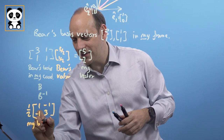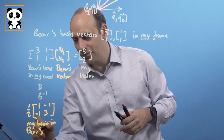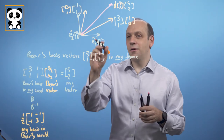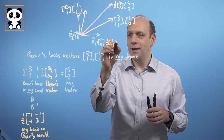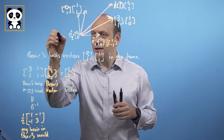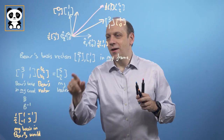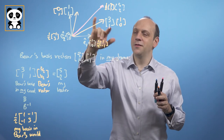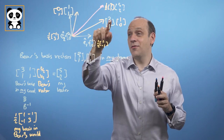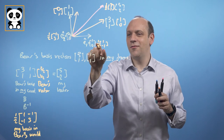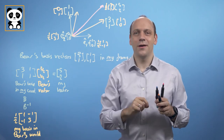That's my basis vectors in Bear's coordinates — my basis in Bear's world. So my 1,0 is going to be 1/2 times (1,-1) in Bear's system, and my 0,1 is going to be 1/2 times (-1,3) in Bear's system. We can verify this: if we take 1/2 of (1,-1) and compose it with Bear's vectors, we get 1 times 3 plus (-1) times 1 divided by 2 equals 1,0. So that really does work.